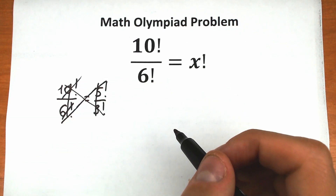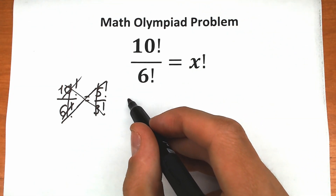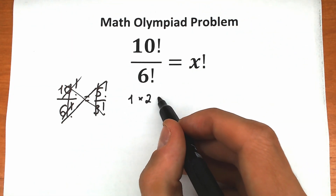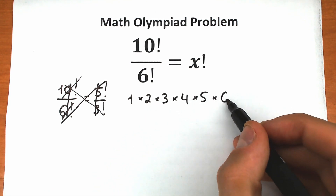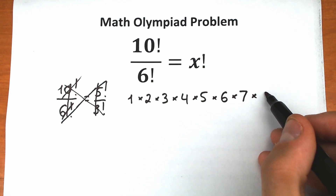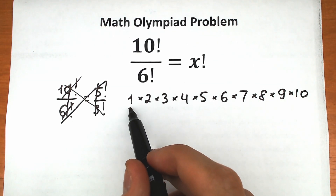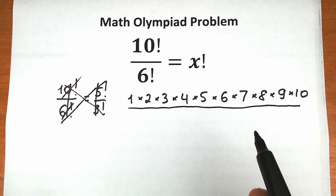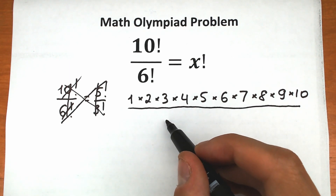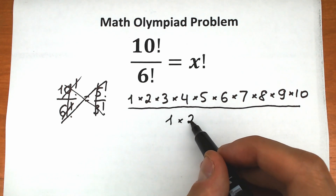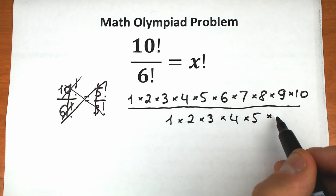How can we solve this question correctly? First of all, let's rewrite 10 factorial as a product: 1 times 2 times 3 times 4 times 5 times 6 times 7 times 8 times 9 times 10. This is our numerator. And we divide all of these by 6 factorial, which is the product 1 times 2 times 3 times 4 times 5 times 6.